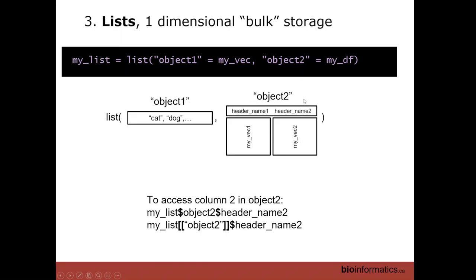If you want to access things within a list, you need to use double brackets or the dollar sign. To access a column of object_two, I say my_list$object_two — that gets me into object_two — then dollar sign header_name_two to access the second column. A second way is using double brackets: my_list[['object_two']] gets the object, then dollar sign to access the column. Double brackets are needed for lists where single brackets were used for vectors and data frames.